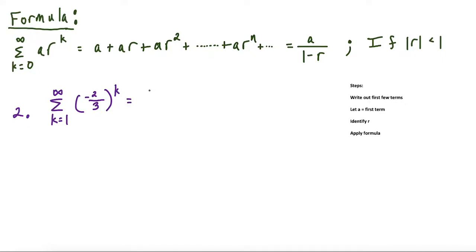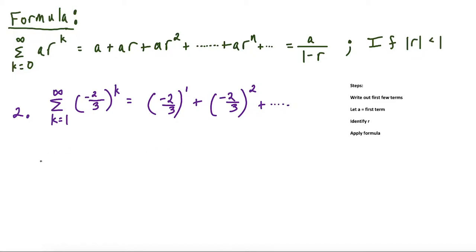We write out the first few terms. We have negative two thirds to the first power — that's something to be careful of, we're starting at one. Then we have plus negative two thirds to the second power, and this continues on. We let a equal the first term, so the first term is negative two thirds. Our r value — what are we multiplying by each time? We're multiplying by negative two thirds each time, so our a value and our r value are exactly the same.